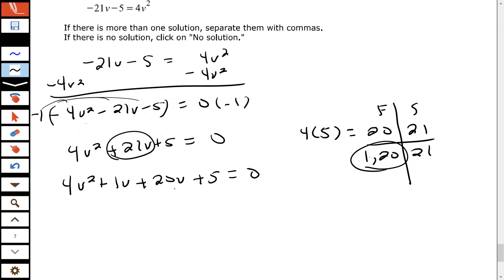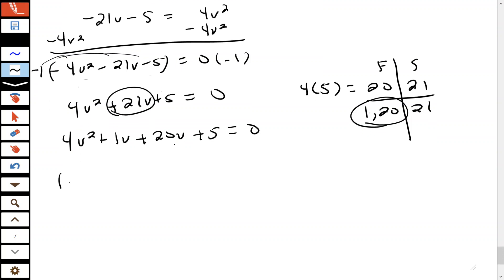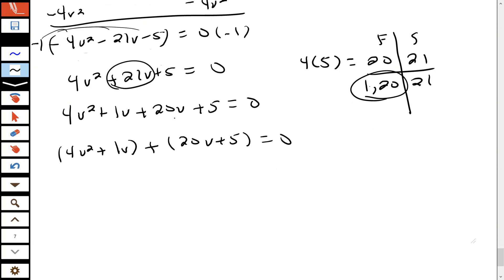The whole reason we go through that process is so we'll have four terms and we can use the factoring by grouping method. Now I'm going to make two groups. After we make two groups, we factor out the GCF from each group. The GCF of the first group is just v, that leaves me with 4v + 1 in the parentheses.